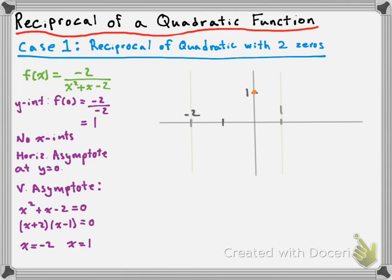Let's look at the interval x less than negative two. We'll pick an x value less than negative two and sub it in to see if we get a positive or negative result. Choosing f of negative three — subbing in negative three, we get negative two over nine minus three minus two, which gives us negative 0.5. What's important is that the value is negative, so the function is negative everywhere on that interval, below the x-axis, approaching the horizontal and vertical asymptotes.